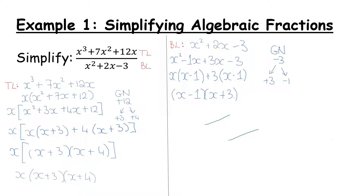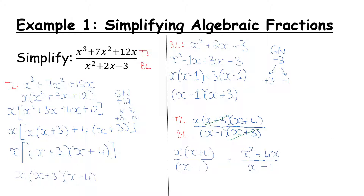We've now fully factorized the top and the bottom line, so let's put them back together. In the top line we had our factorized answer, and in the bottom line we had our factorized answer. When we put them back together, both above and below the line there is an x plus 3, so these can be cancelled. This leaves us with x(x plus 4) over (x minus 1), which multiplied out gives x squared plus 4x over x minus 1. As part of a question it may not mention factorization — you have to know that you need to do factorization in order to simplify the fraction.